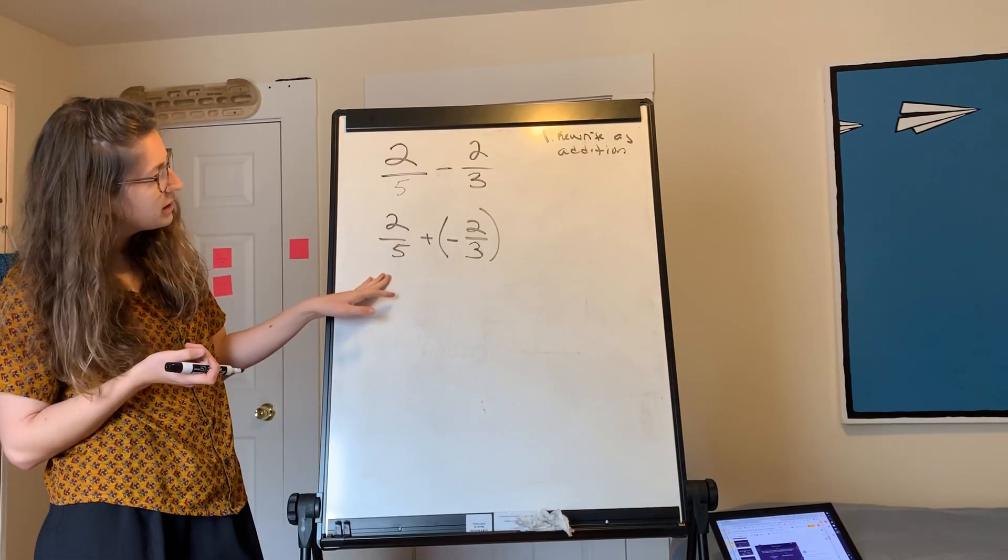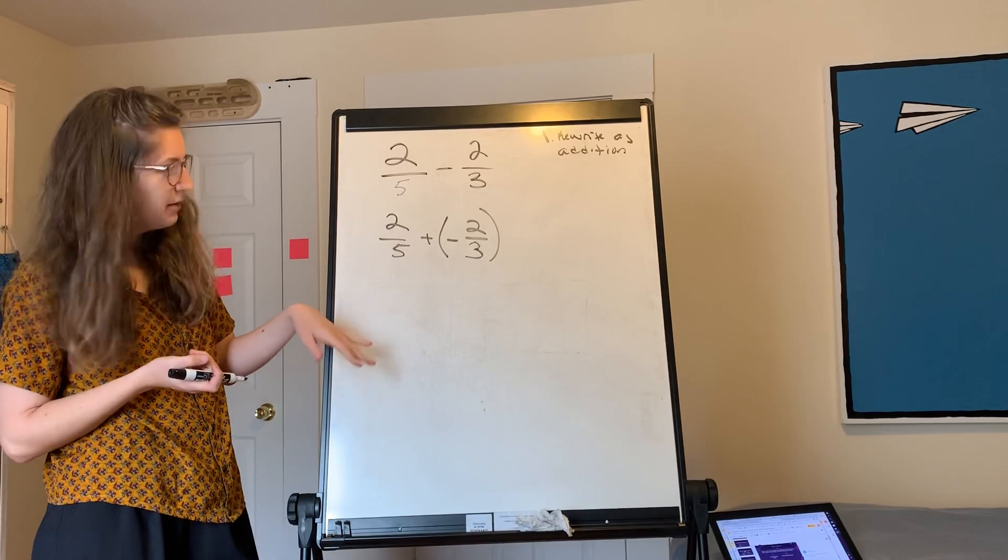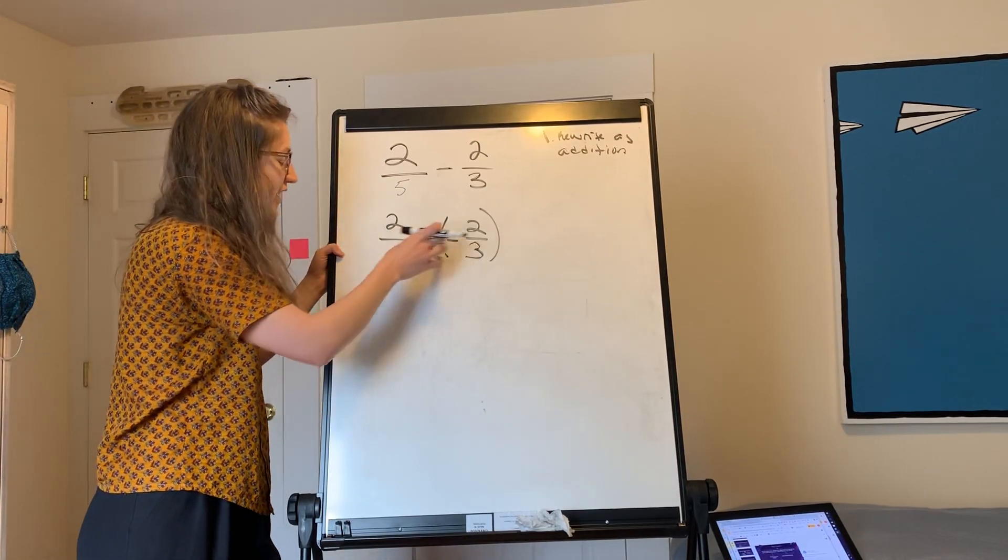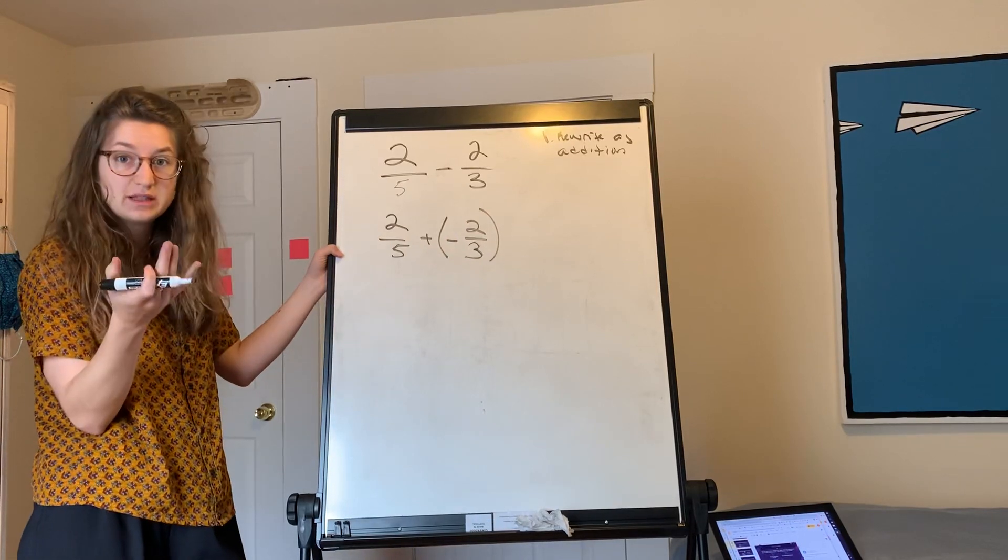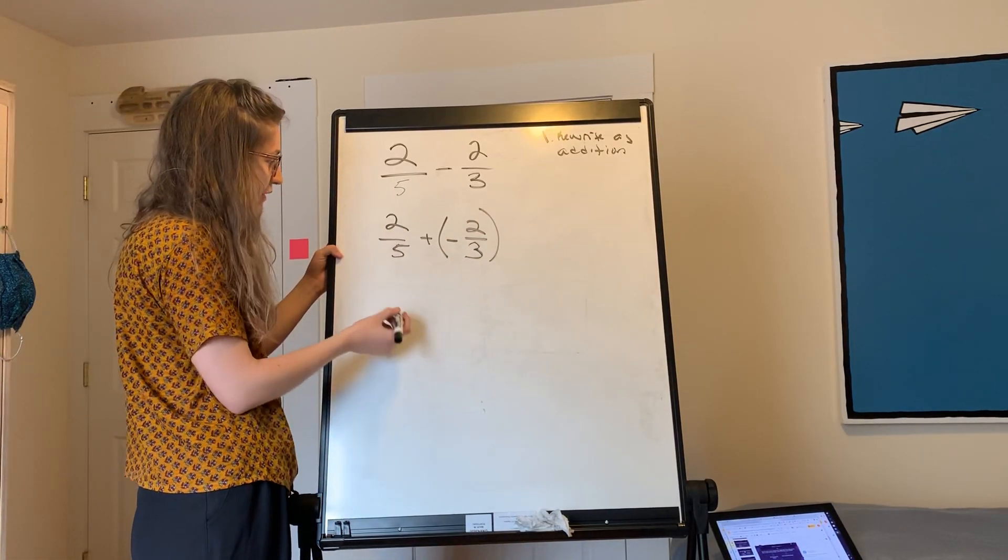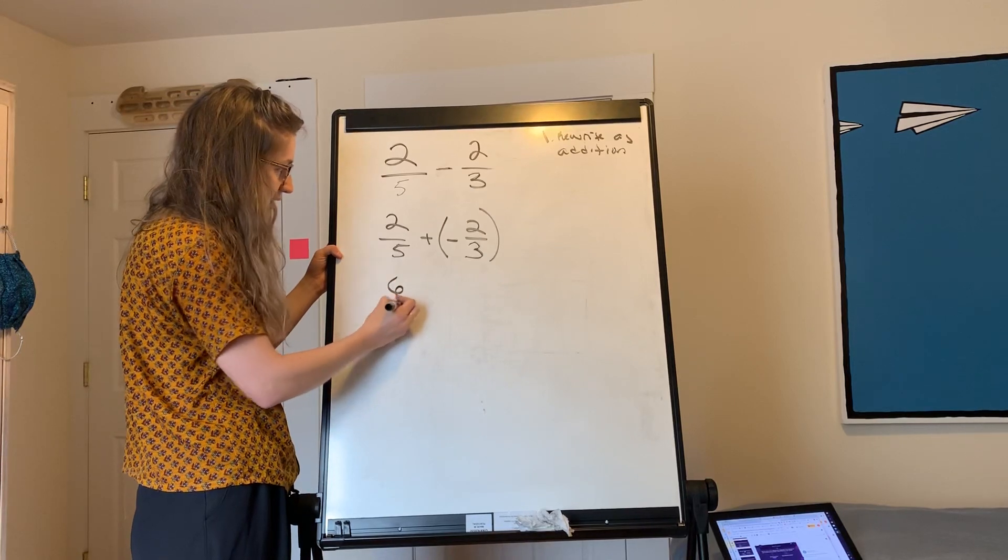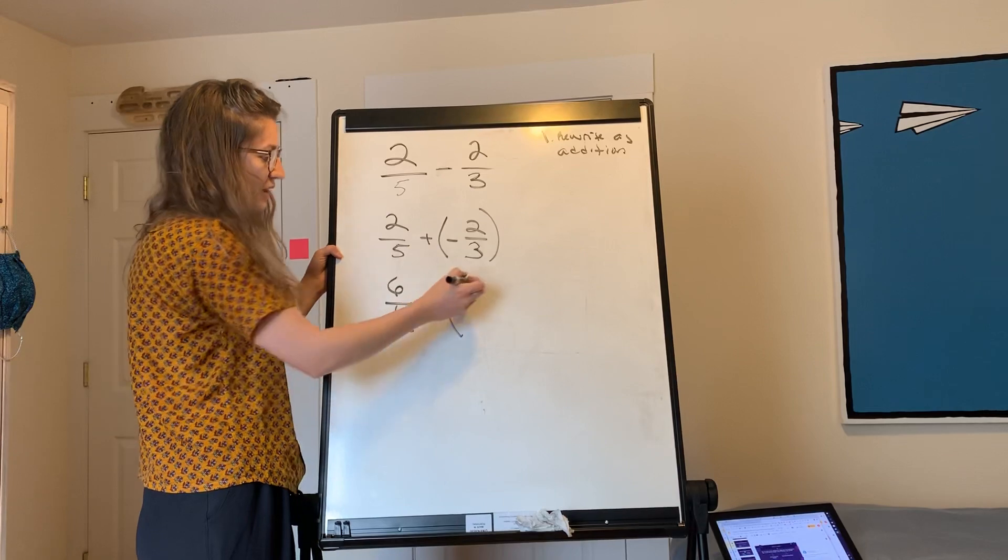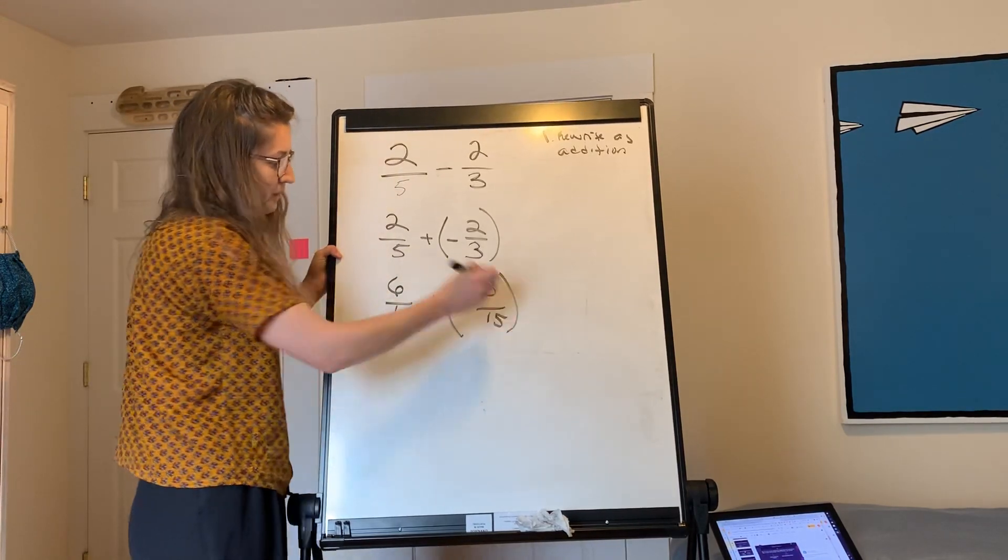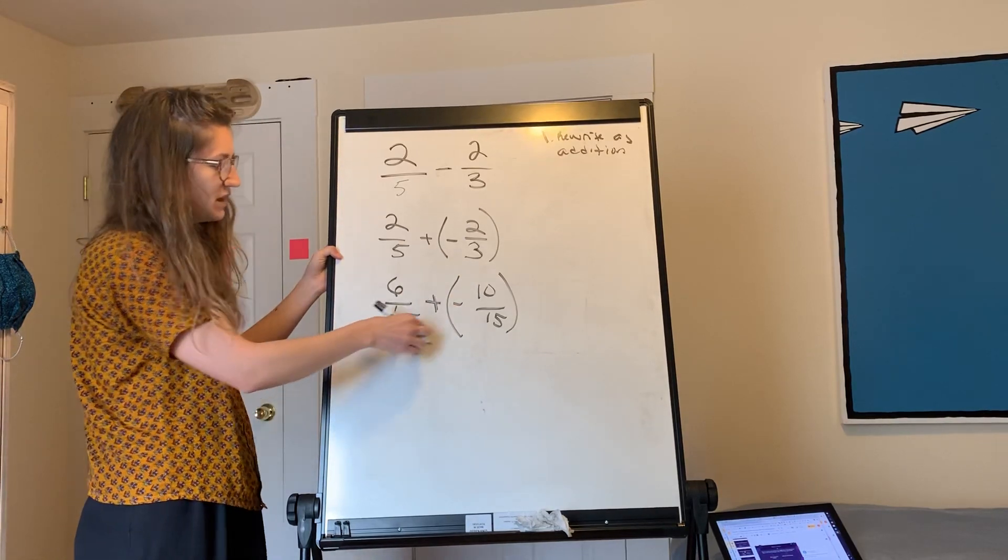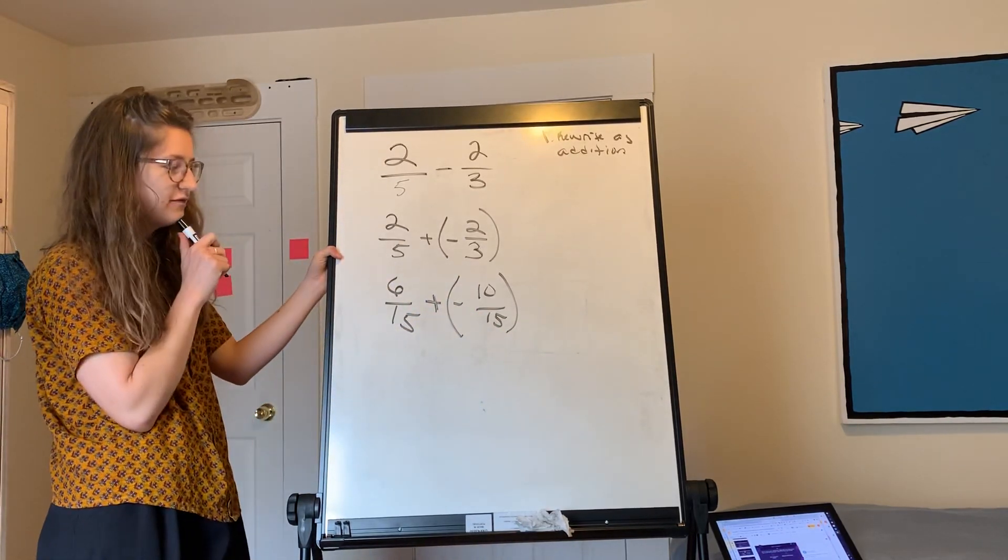And the way we're going to do that is creating a common denominator. We've done this a bunch of times recently. So the common denominator of fifths and thirds is fifteenths. Two-fifths is the same thing as six-fifteenths and two-thirds is the same thing as ten-fifteenths.